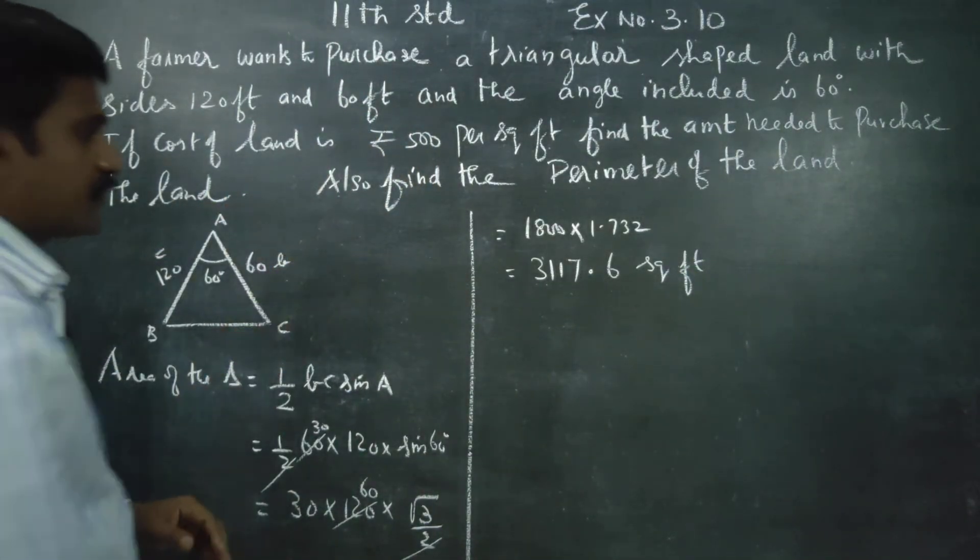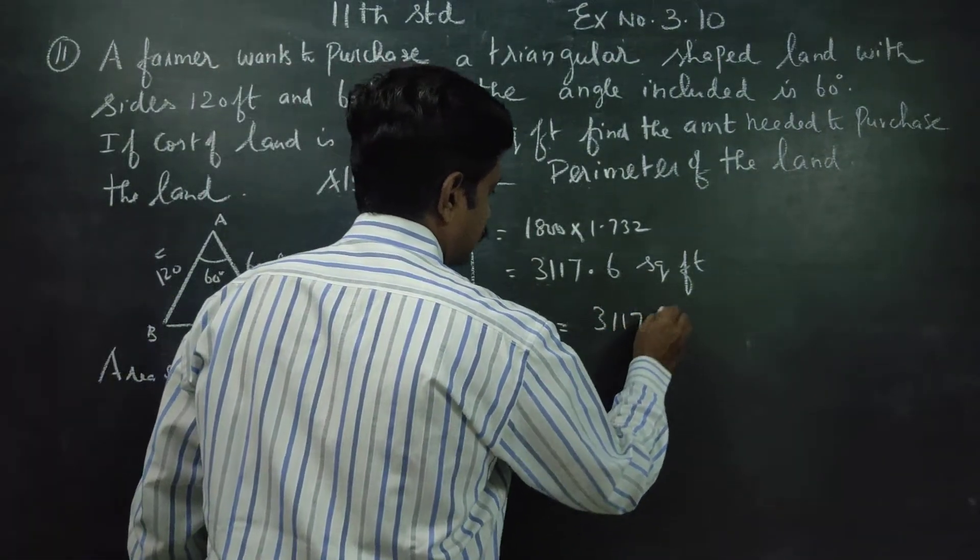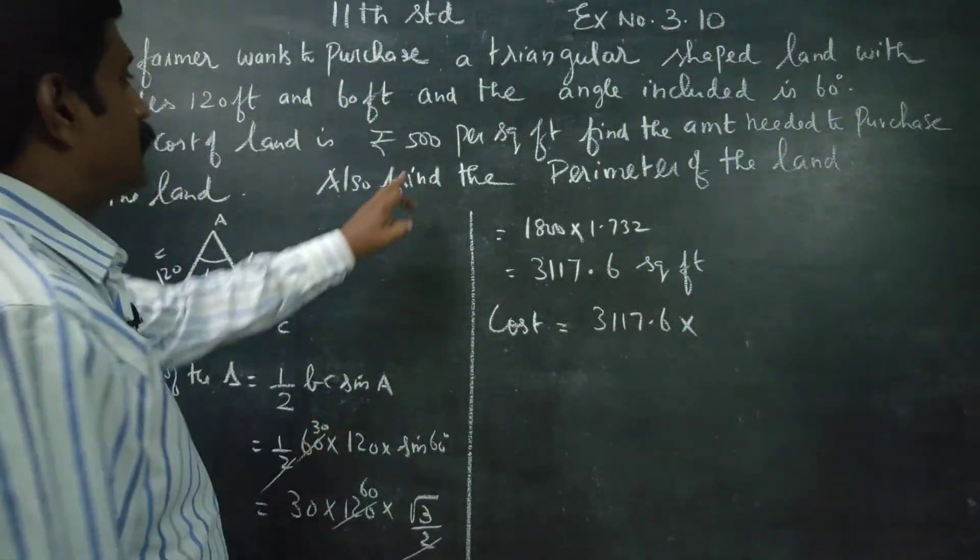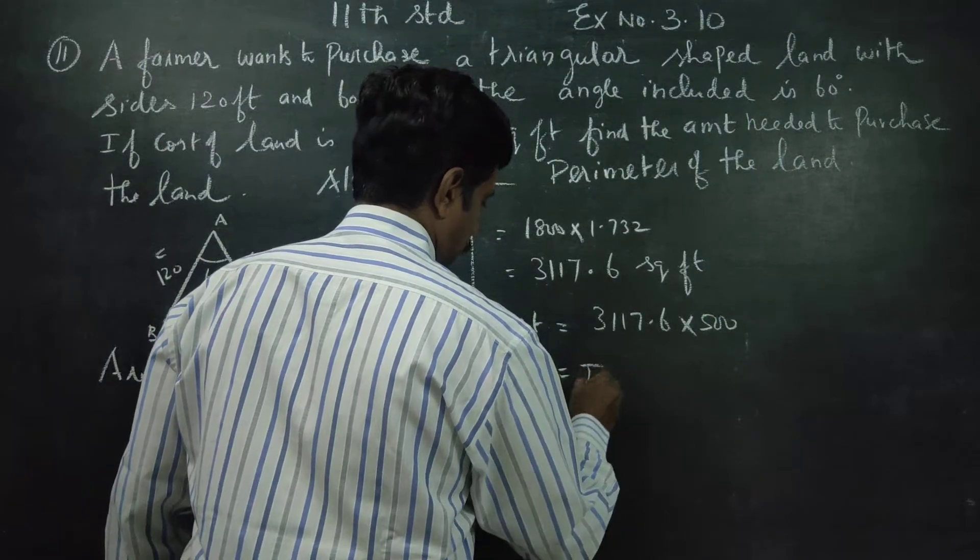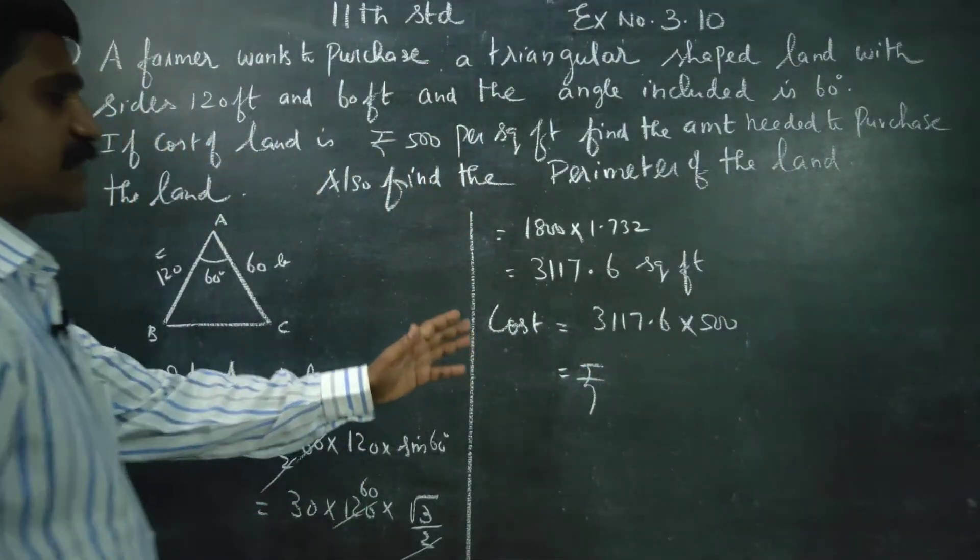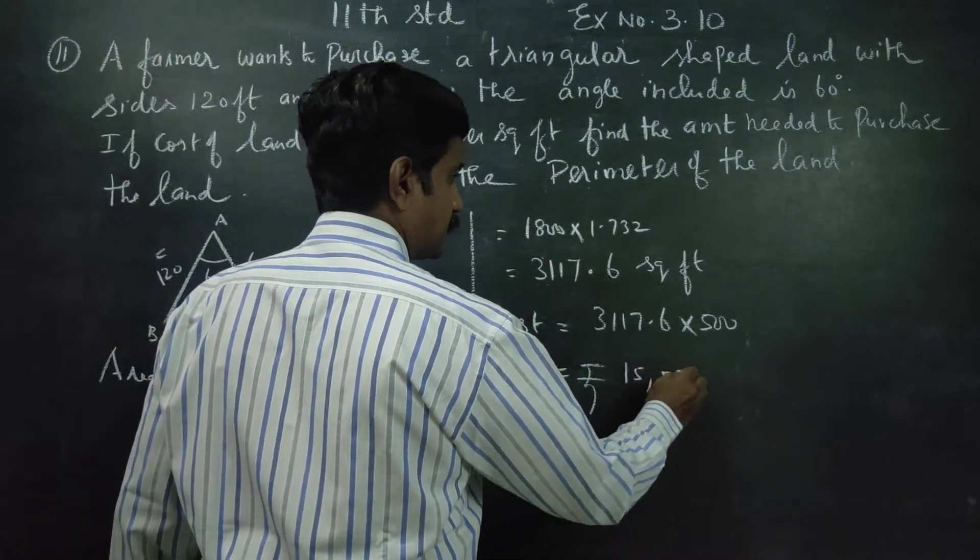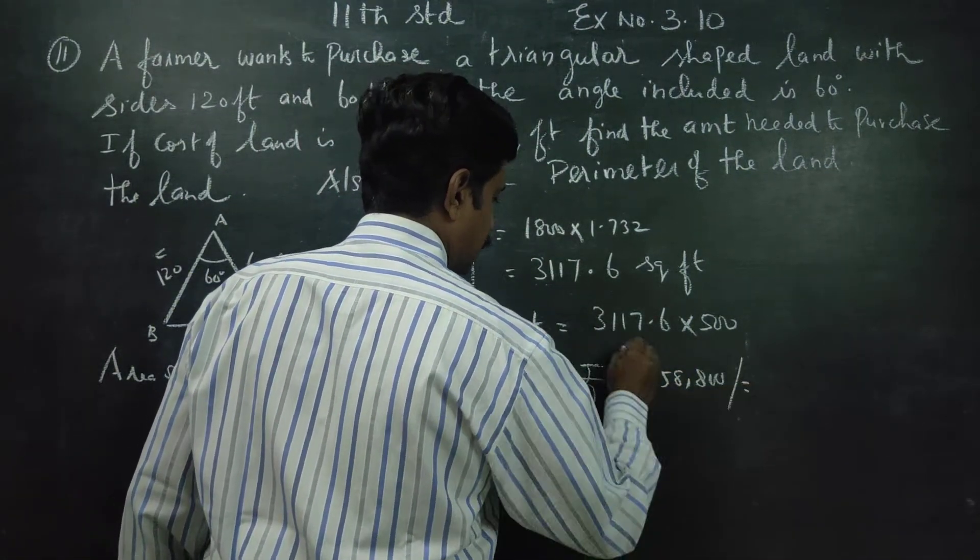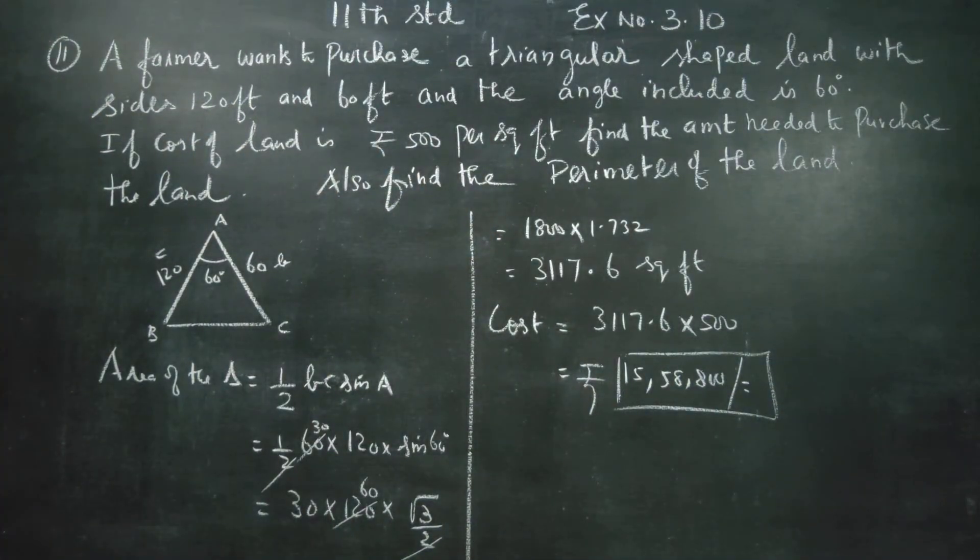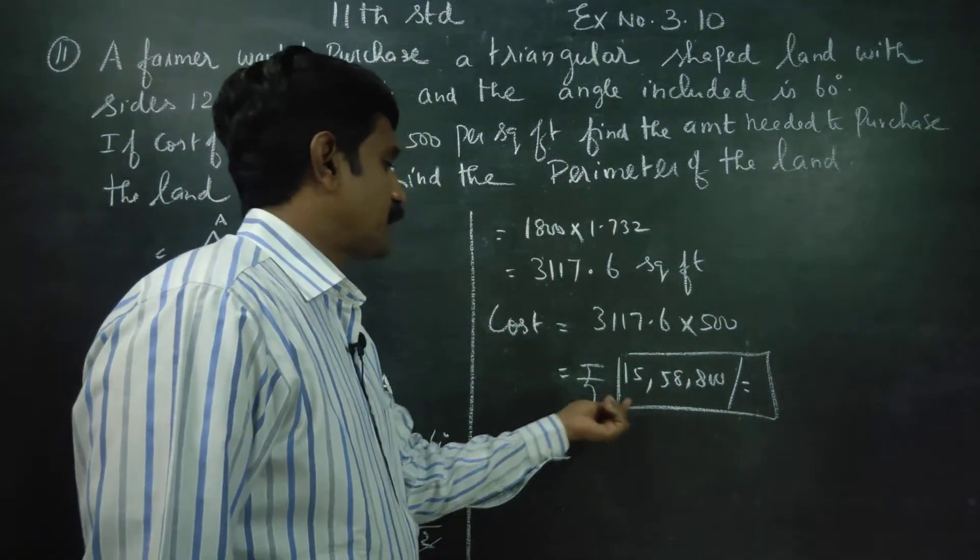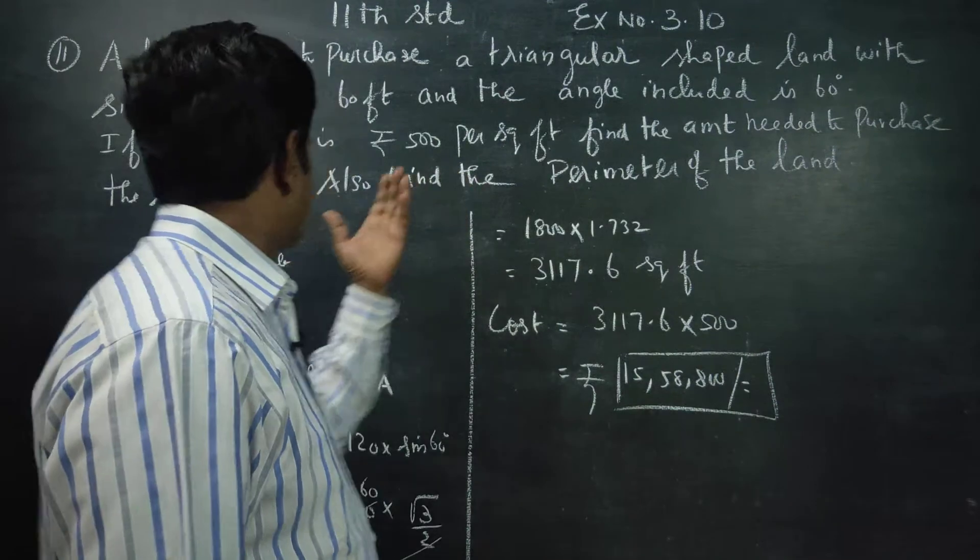After this you have to find the cost. Cost is equal to 3117.6 into per square feet $500, you will get $15,58,800.